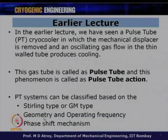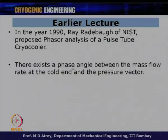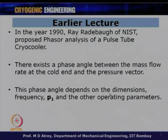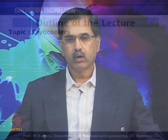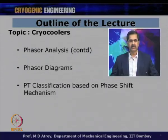This phase shift mechanism is what we concentrate on in this lecture. In 1990, Ray Radabaugh from NIST proposed a phasor analysis of a pulse tube cryocooler to understand the effect of the phase angle — the angle between the mass flow rate at the cold end and the pressure axis. This phase angle depends on the dimensions, length, diameter, operating frequency, amplitude of pressure pulse P1, and other operating parameters. This lecture extends that analysis using phasor diagrams for various pulse tube types.